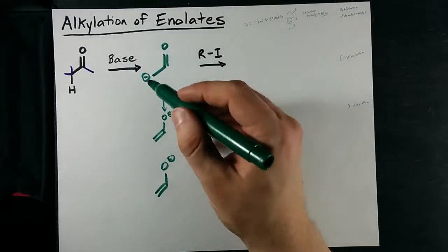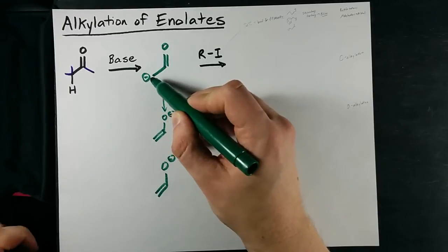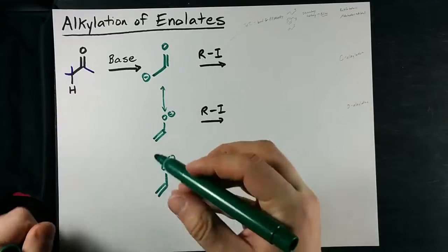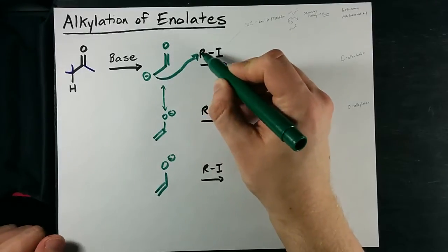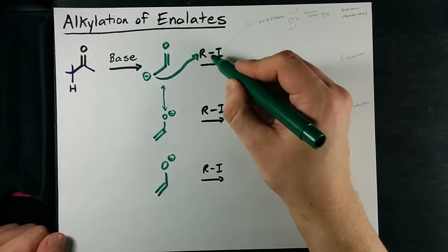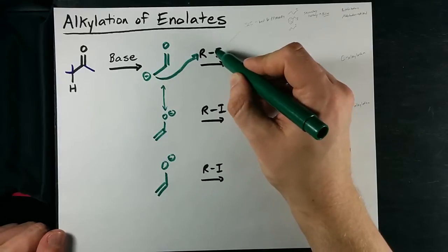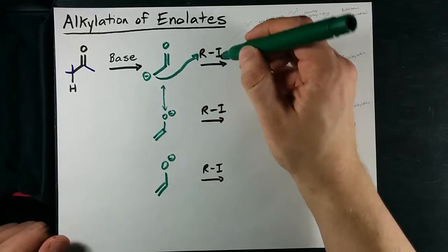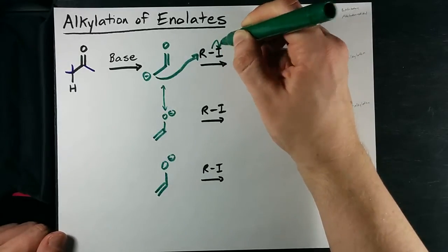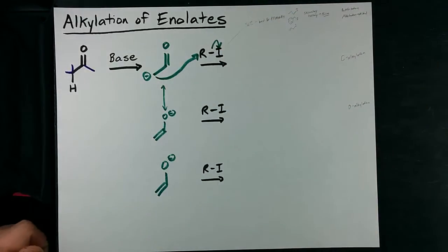What I'm here to tell you is that this lone pair that is now on the carbon atom can attack an alkyl group that is attached to a halogen. This halogen is delta minus, that makes this slightly delta plus, and it is a nucleophilic attack displacing or substituting the I.